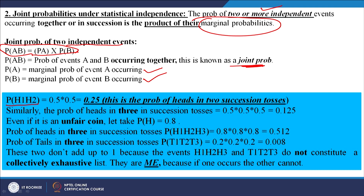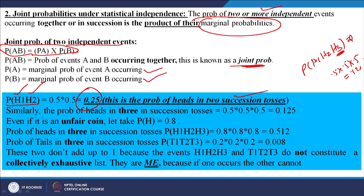What is the probability of heads when you toss a coin and then toss it a second time? That probability would be 0.5 times 0.5 equals 0.25 — this is the probability of heads in two successive tosses. If you ask what is the probability of heads three times in succession, it would be 0.5 times 0.5 times 0.5, which is 0.125.